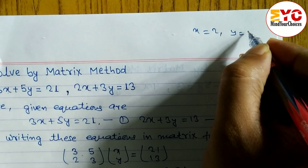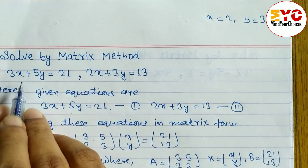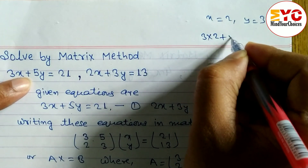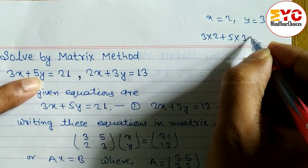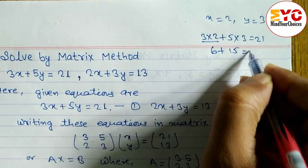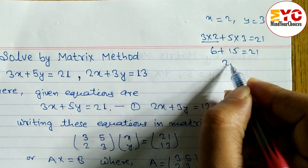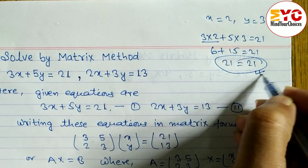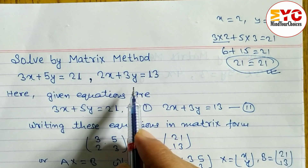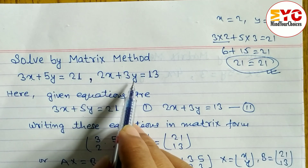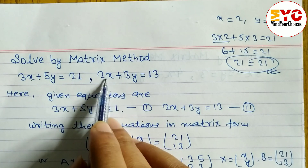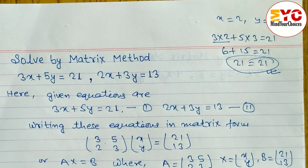To verify, substitute x equals 2 and y equals 3 into equation 1: 3 times 2 plus 5 times 3 equals 6 plus 15 equals 21. Correct! For equation 2: 2 times 2 plus 3 times 3 equals 4 plus 9 equals 13. Both sides match, so our answer is 100 percent correct.